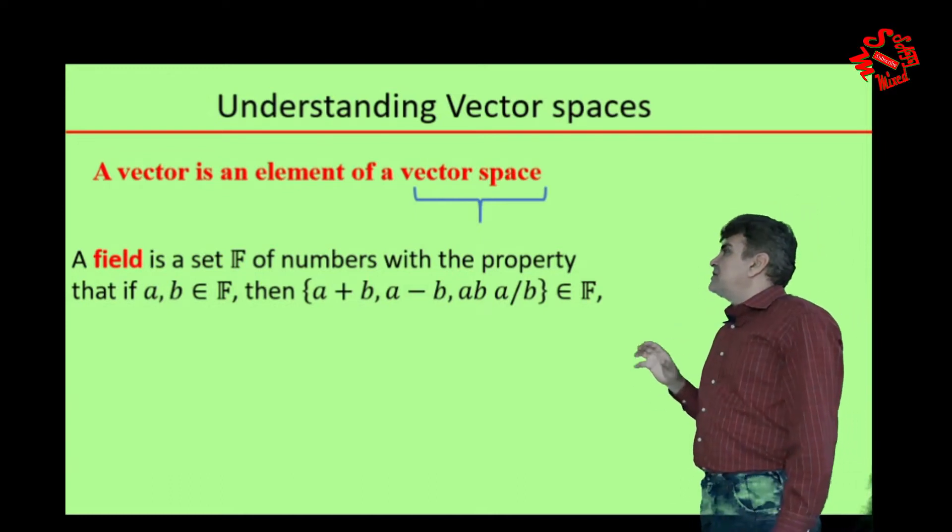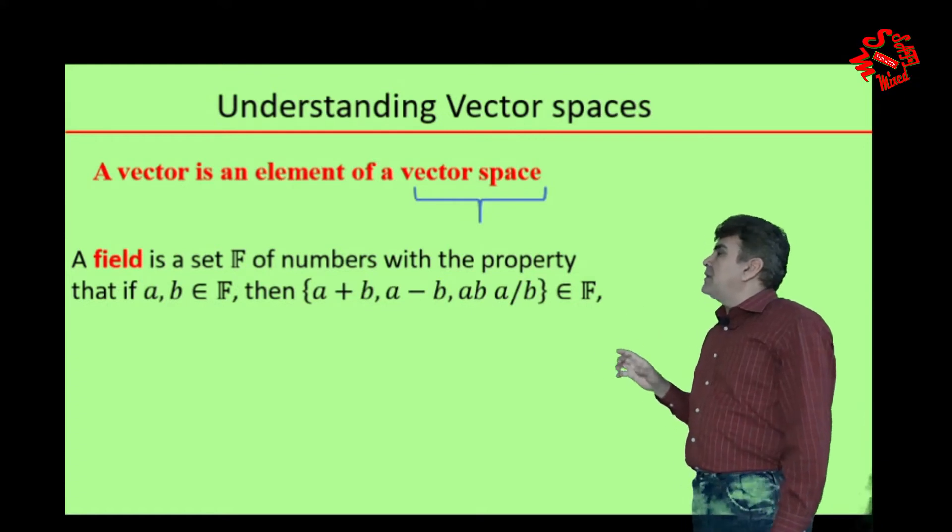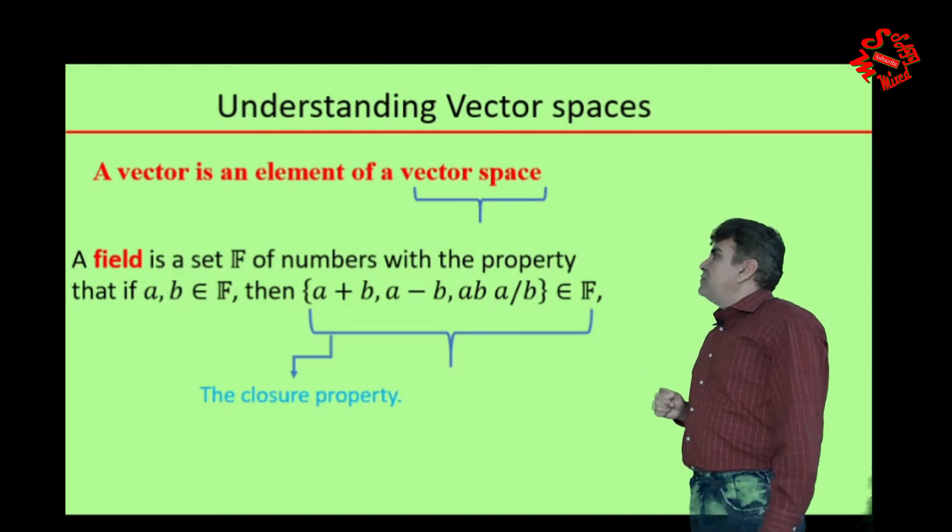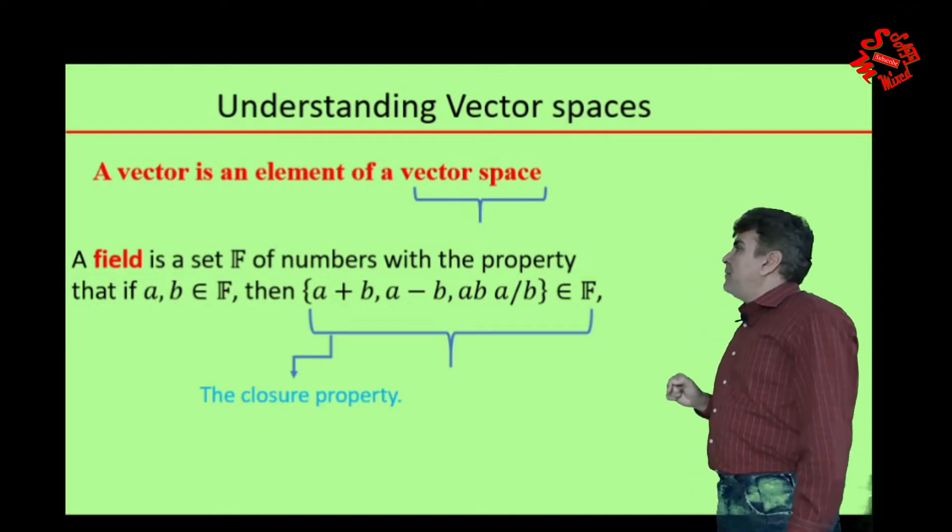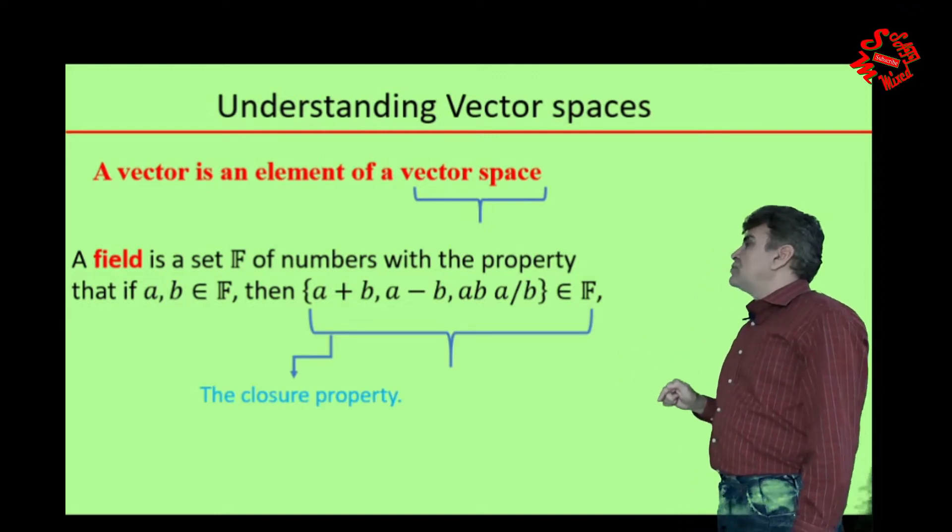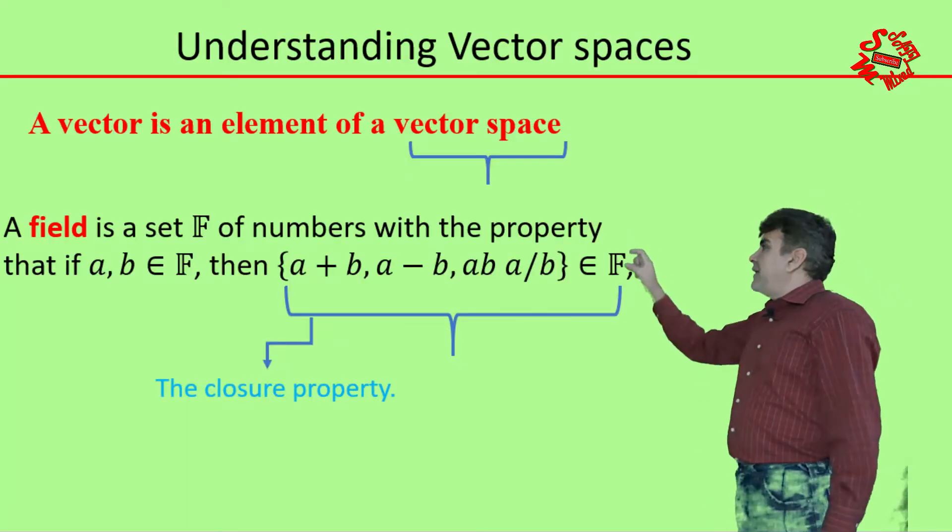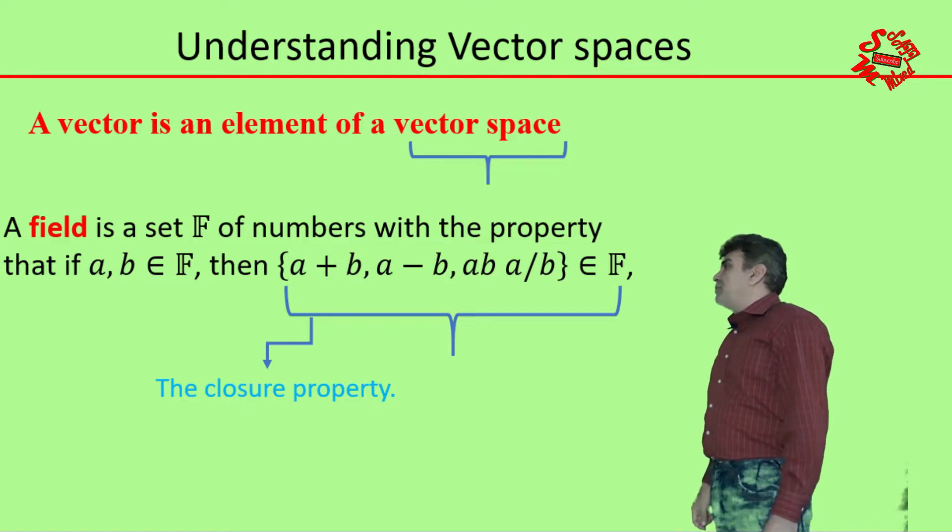A field F is a set of numbers with the property that if A and B belong to F, then the set consists of four elements: A plus B, A minus B, A times B, and A divided by B also belongs to F. This set of four elements is called closure property.